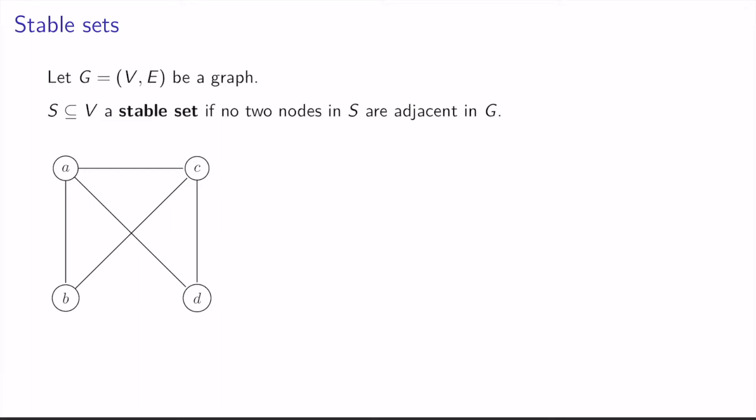Let G be a graph with node set V and edge set E. A subset of nodes S is called a stable set if no two nodes in S are adjacent in G.